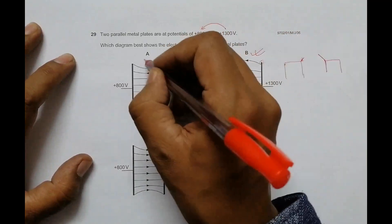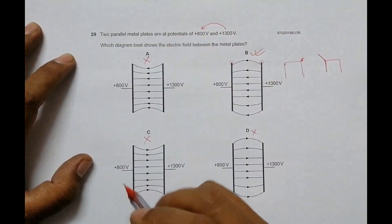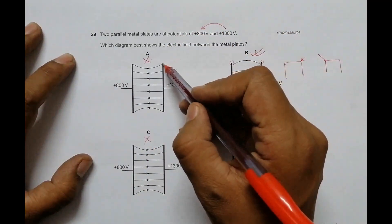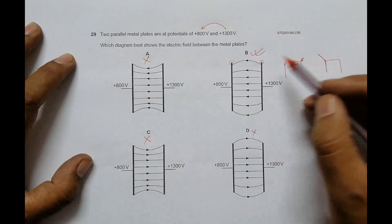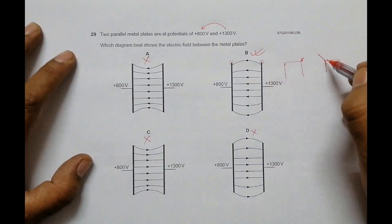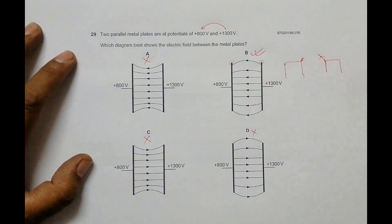Choice A is incorrect because lines of force definitely cannot go inward, but they can go outward because of this type of configuration. So choice B should be the correct answer.